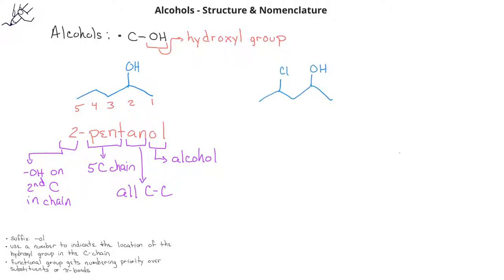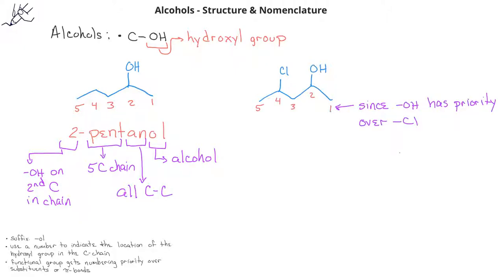In this example, we have both a chloro substituent and a hydroxyl group as the functional group. It's important to remember that functional groups like hydroxyl groups take numbering precedence over substituents like halogen atoms. In this case, we would start numbering from the right, since this gives us a lower number for the hydroxyl group. The name of this compound would then be 4-chloro-2-pentanol.